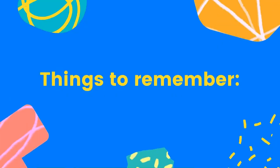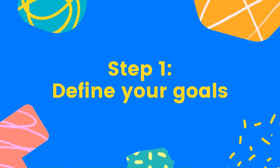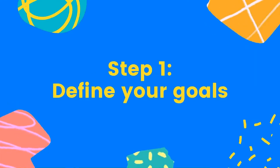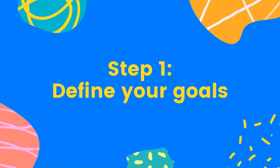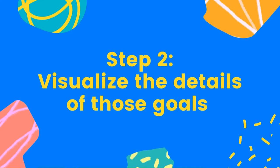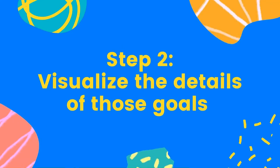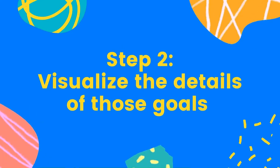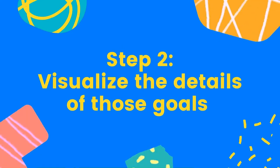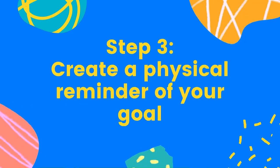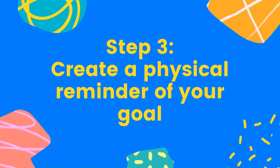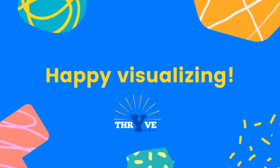Let's recap. The first step to visualization is to define your goals and visualize what you want to achieve. Step two is to visualize the details of those goals — what routines, actions, and habits do you need to develop? And step three is to create a physical reminder of your goal, like a picture or a vision board. Happy visualizing!